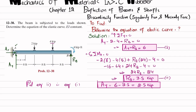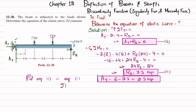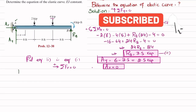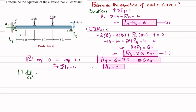AX can be found using the sum of forces in the x-direction equals zero; since there are no horizontal loads, AX equals 0. Now we move toward the equation of the elastic curve. We know that EI times d²V/dx² equals the bending moment M. Using Macaulay's method, we will find this moment M.